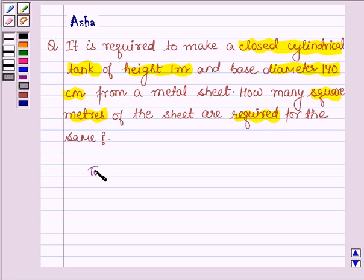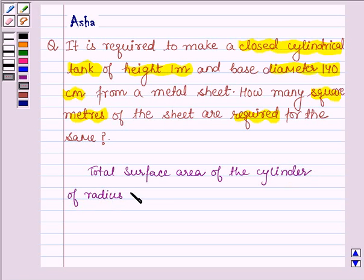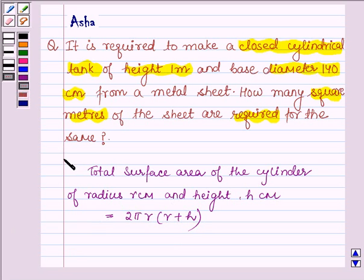First, let us learn the formula to calculate the total surface area of the cylinder of radius r cm, which is the radius of the base, and height h cm. This is equal to 2πr(r + h). With the help of this formula we are going to solve the above problem. So this is our key idea.